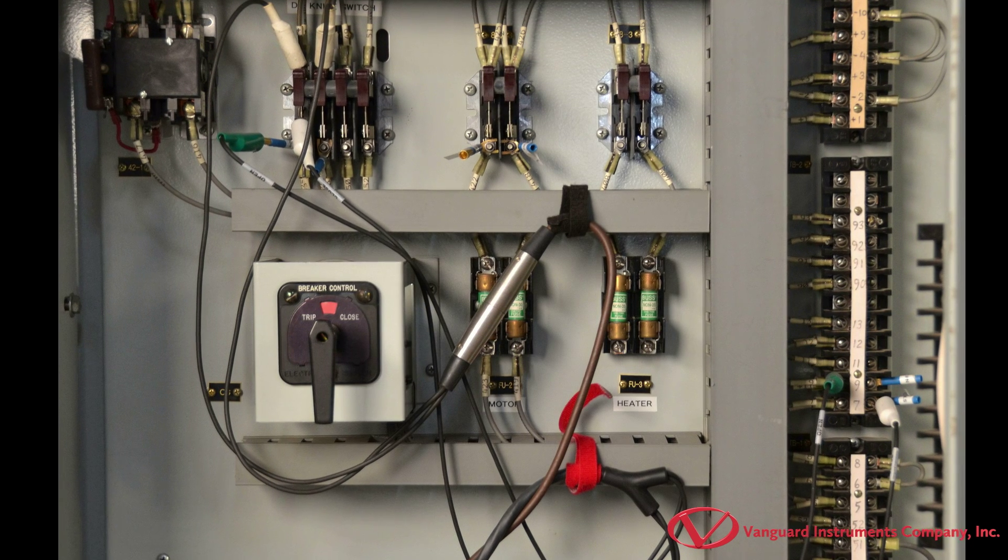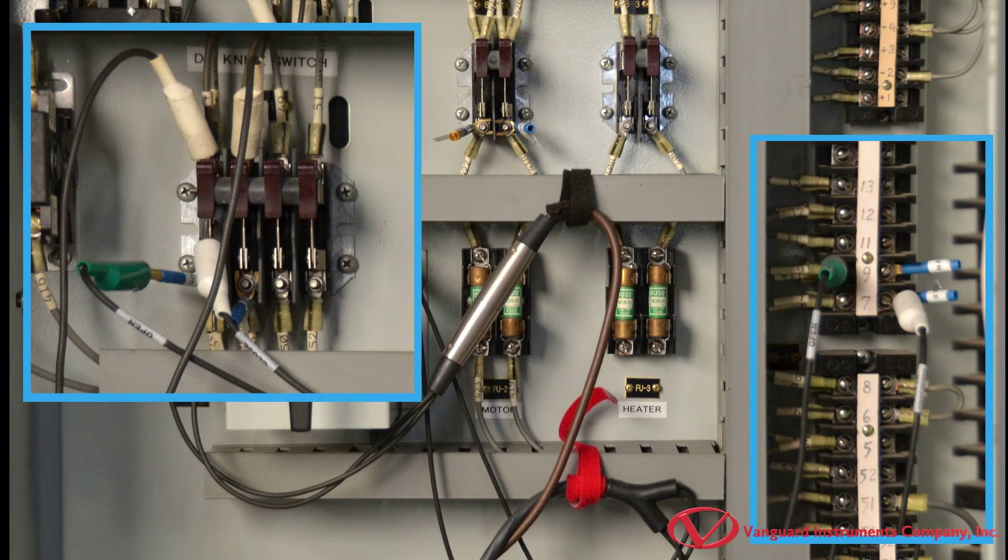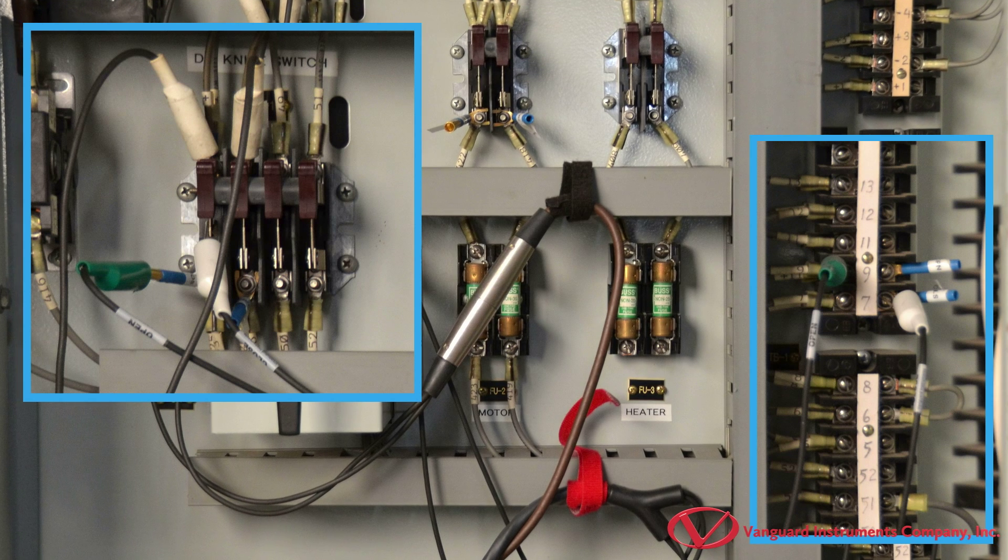Then, we will use the supplied initiate cable to connect to the breaker's control circuit. The initiate circuit acts like a switch to energize the trip or close coil.